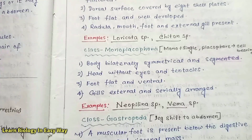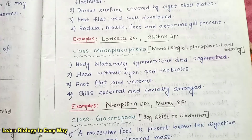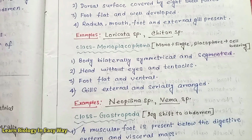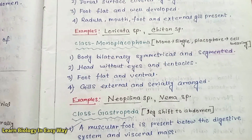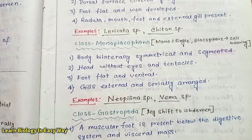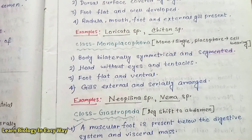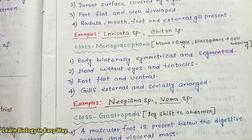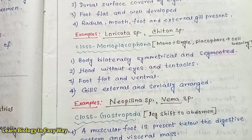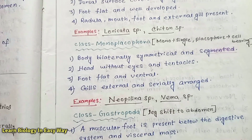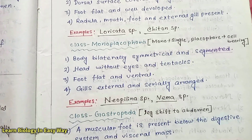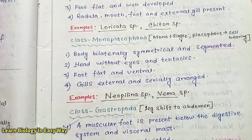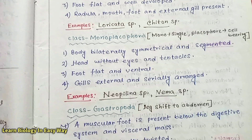Class Monoplacophora — 'mono' means single, 'placophora' means shell bearing. Body is bilaterally symmetrical and segmented. Head without eyes and tentacles. Foot is flat and ventral. Gills are external and serially arranged. Examples: Neopilina sp., Vema sp.